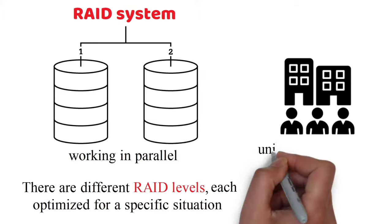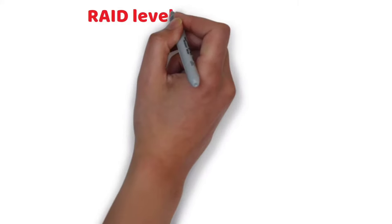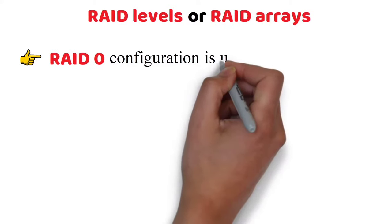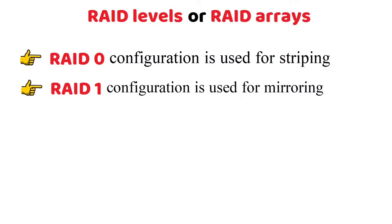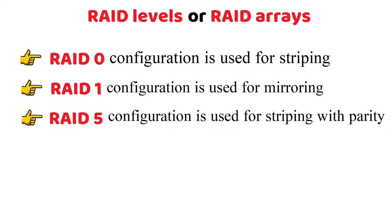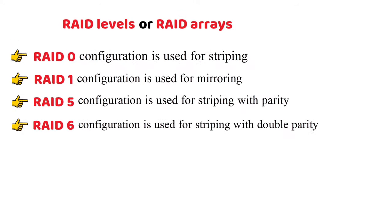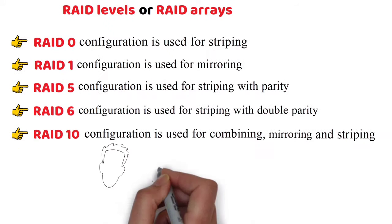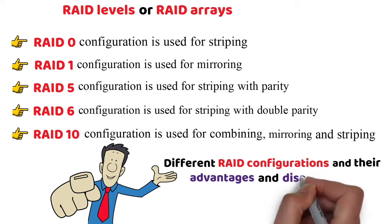Companies come up with their own unique numbers and implementations, and there are many different kinds of RAID levels or RAID arrays. RAID 0 configuration is used for striping. RAID 1 configuration is used for mirroring. RAID 5 configuration is used for striping with parity. RAID 6 configuration is used for striping with double parity. RAID 10 configuration is used for combining mirroring and striping. Let's look into different RAID configurations and their advantages and disadvantages.